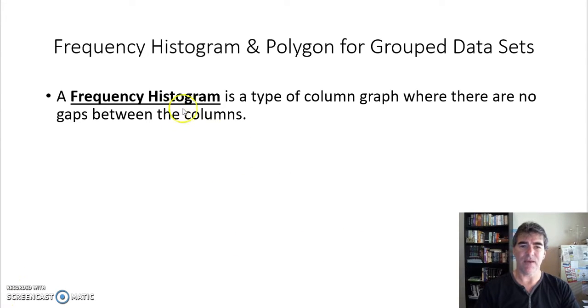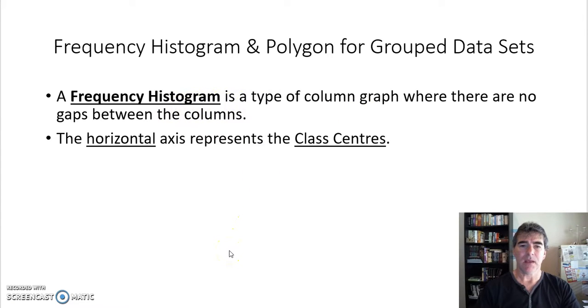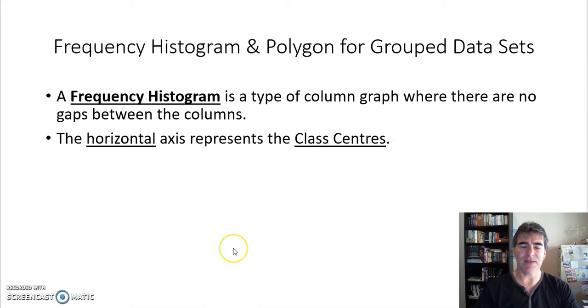So again, the frequency histogram is a type of column graph with no gaps in between. Our horizontal axis this time represents what we call our class centers because we've got groups or classes, and our vertical axis still represents our frequency for each class this time.